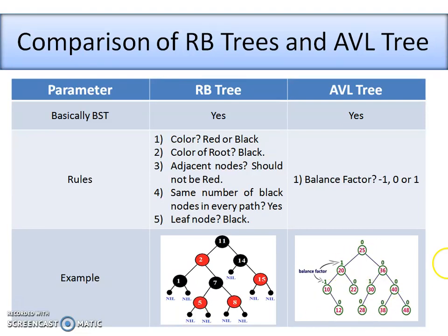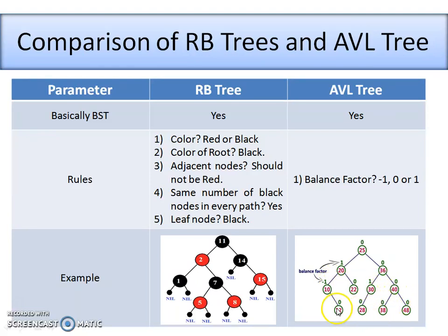This balance factor must be found for every node. Let's start with node 25: the height of the left subtree is 4, and the height of the right subtree is 4 — so 4 minus 4 equals 0. The balance factor of node 25 is 0. You can check each node in the same way; the balance factors are shown on the tree. If they are all in the range minus one, zero, and one, and the tree is also a binary search tree, then we can say it is an AVL tree — and this example satisfies both conditions.